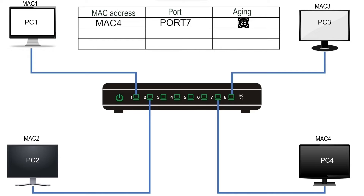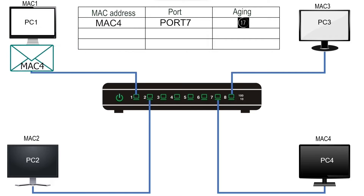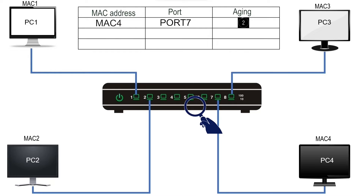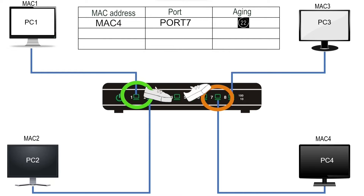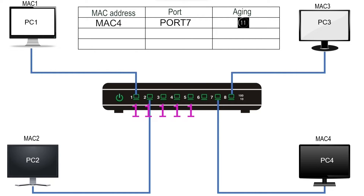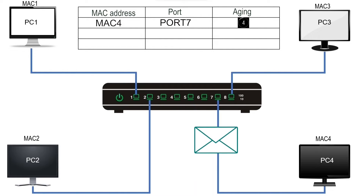For example, PC1 generates a unicast frame for PC4 with destination MAC address MAC4. The frame reaches the switch on port 1. The switch checks the CAM table and finds an entry for MAC4, deciding to forward the frame from port 7. It then checks the VLAN configuration: if the destination port's VLAN ID matches the source port's VLAN ID, it forwards the frame; if not, it discards it. Since the default VLAN ID of all ports is 1, the IDs match and the frame reaches PC4.